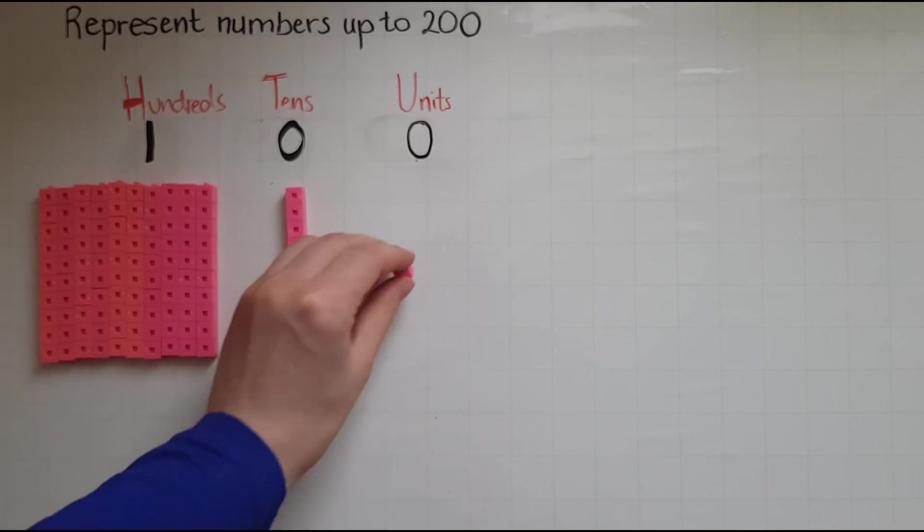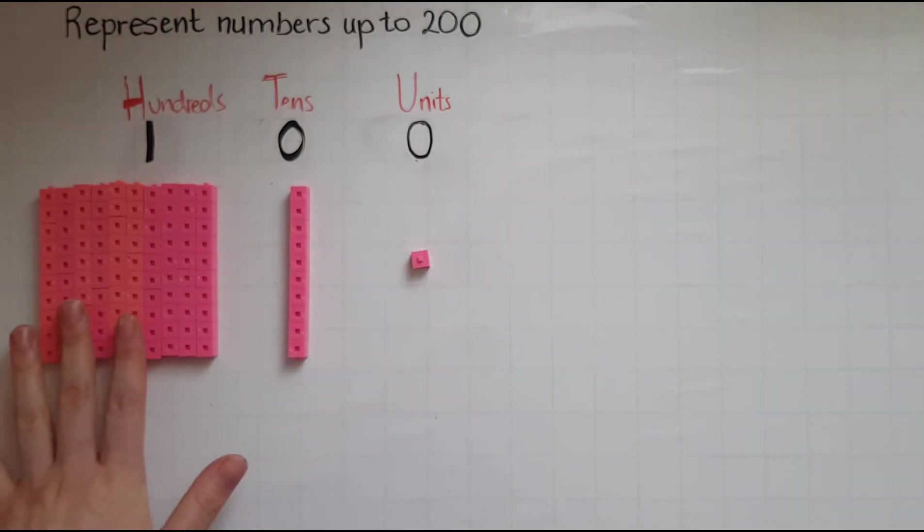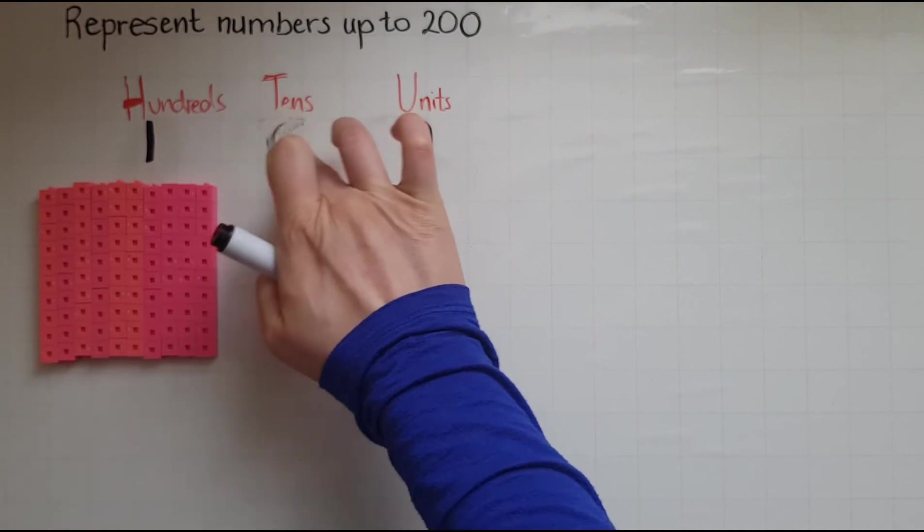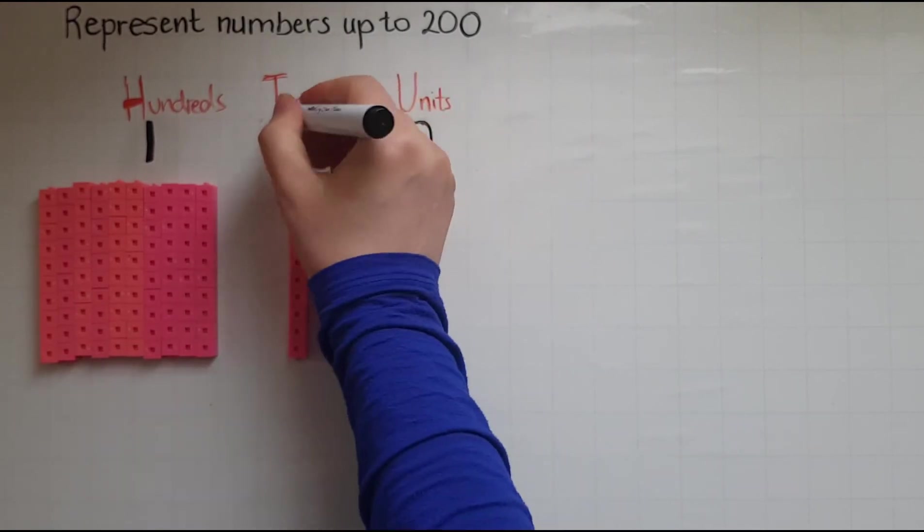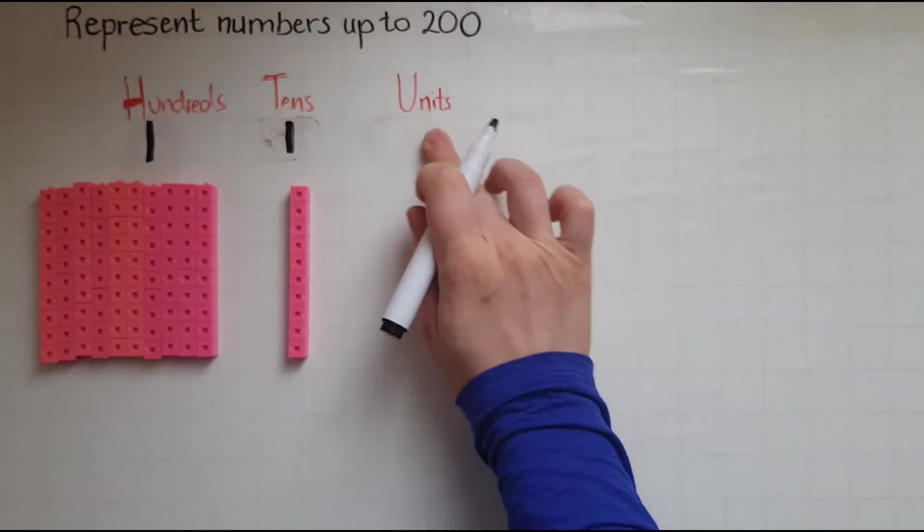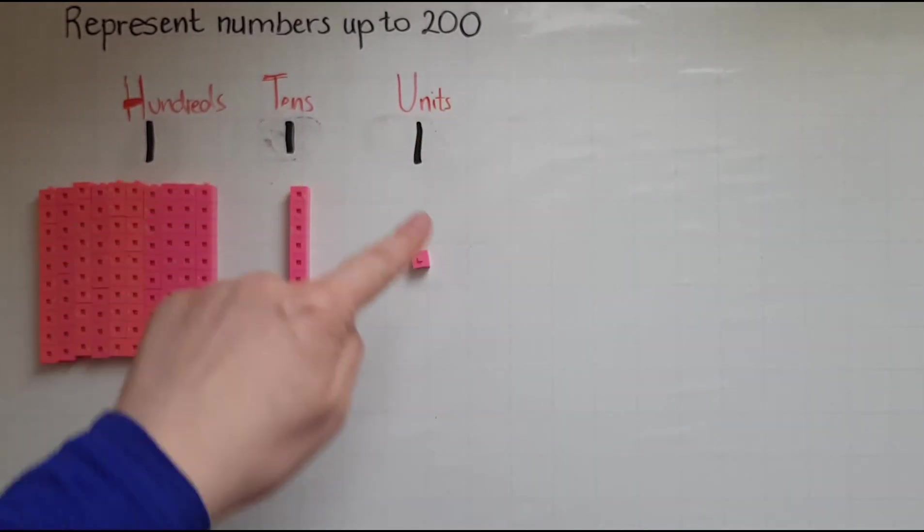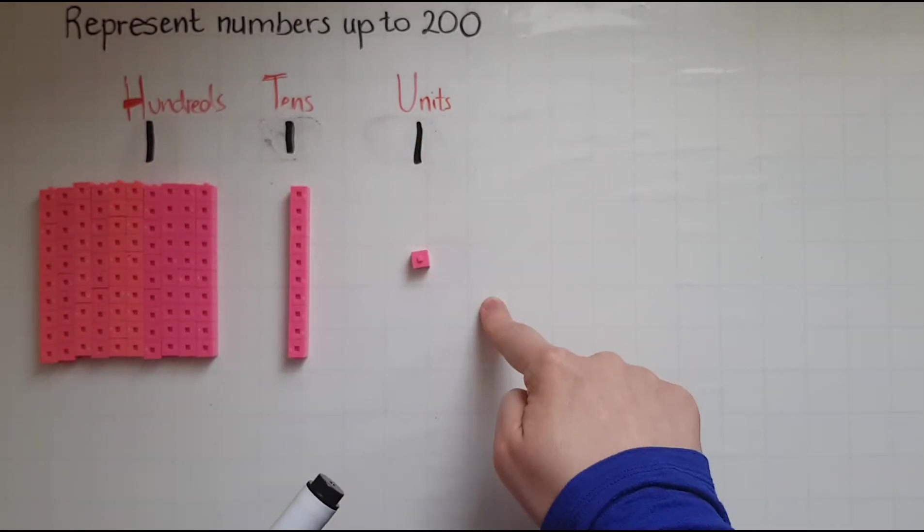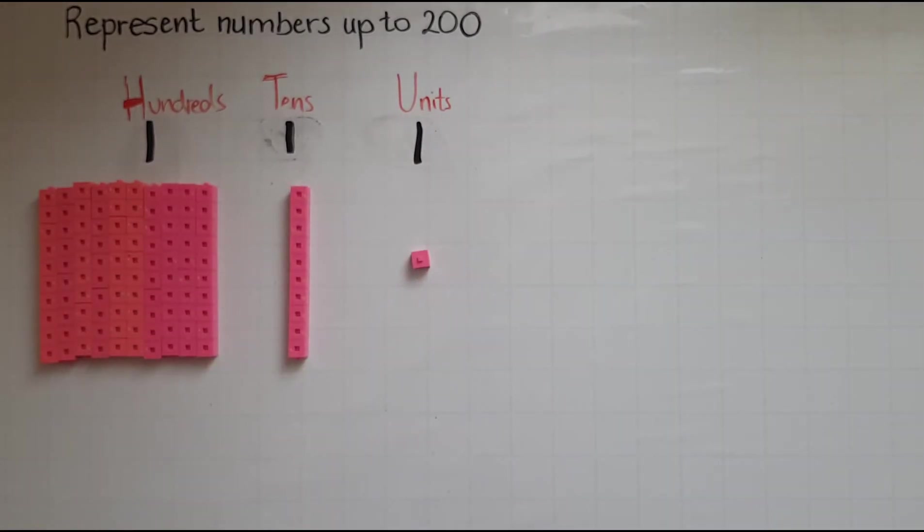Whereas now I have a block of a hundred, a block of 10 and a block of, and a unit, a single unit. So one, one, one, one. So this one represents the units. This one represents the tens. And this represents the hundreds.